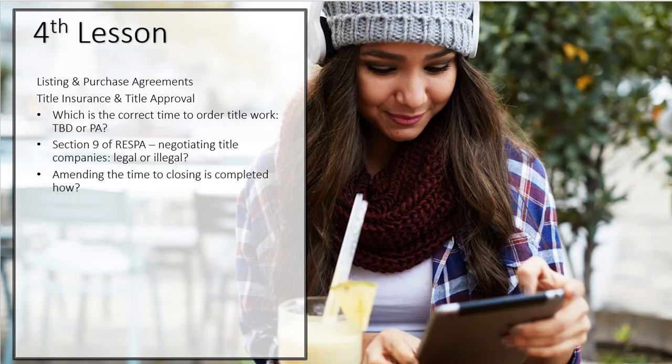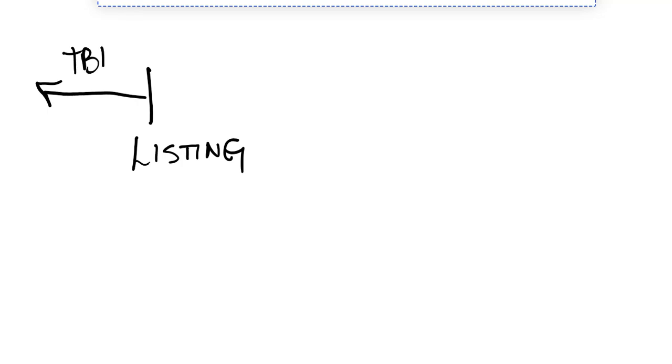Well, there are technically two times that you can order title work. So let's look at them. The first one is when we get a listing. A lot of agents will go ahead and order the title work here and call it a TBD or sometimes you also hear it called a preliminary, and that's because we don't know who the buyer is yet.